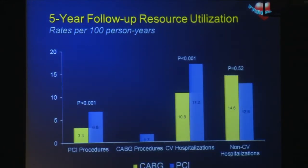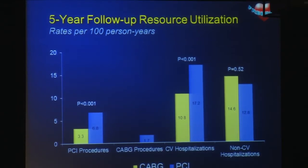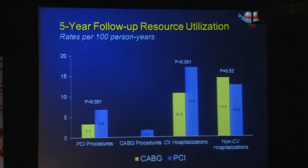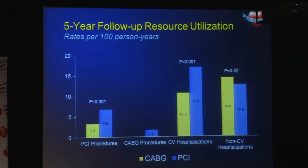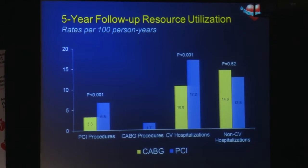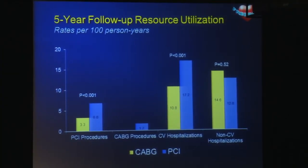While the PCI costs associated with the PCI procedure were higher, over the course of the index hospitalization period, there were higher costs for the CABG arm due to the prolonged recovery period and complication rates. Physician fees were also higher for CABG, rendering a cost difference of $8,600 higher for patients in the CABG treatment arm, which was highly significant. Over the course of the five-year follow-up period, however, there were higher rates of resource use in the PCI arm, largely due to repeat revascularization procedures. Rates of cardiovascular hospitalizations were also significantly higher for patients in the PCI arm, with no significant difference in non-cardiovascular hospitalizations.